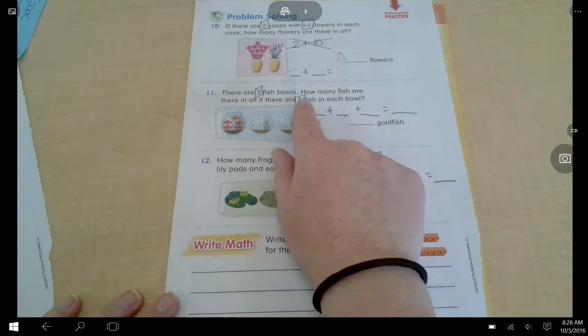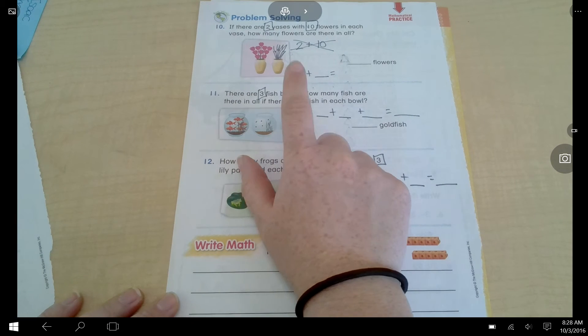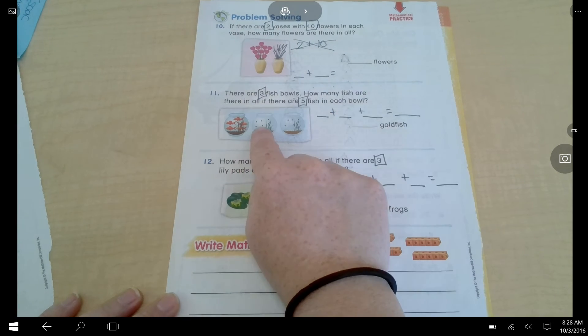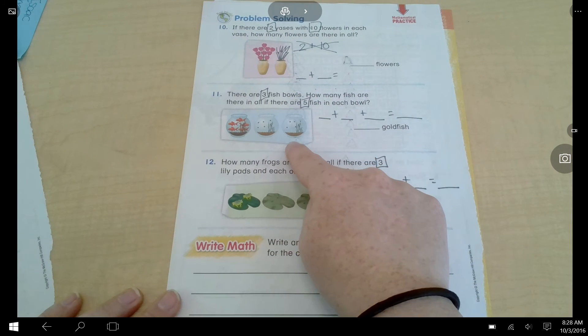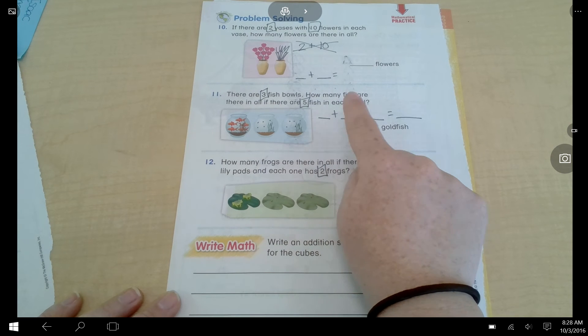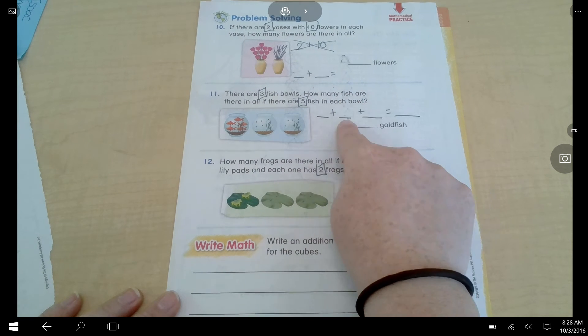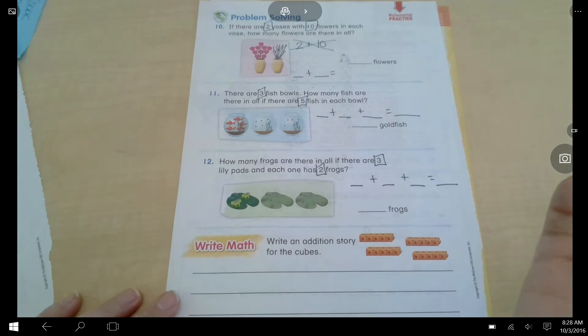There are three fish bowls. How many fish are there if there are five fish in each bowl? I drew five dots in each bowl to help me. So, that's 5, 10. What's the last one going to be? It's repeated addition. 5, 10. 5 plus 5 plus 5 equals. What's it going to be?